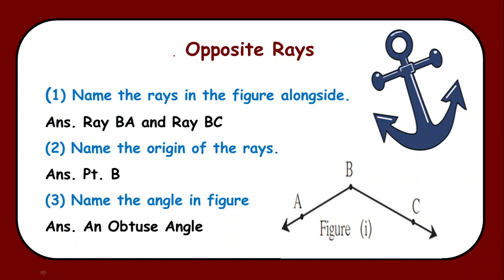Now in order to learn what is meant by opposite rays we are going to see some examples. Here we have been provided with a figure in which we are able to see an angle. By observing this figure, we need to name the rays which we are able to figure out over here.